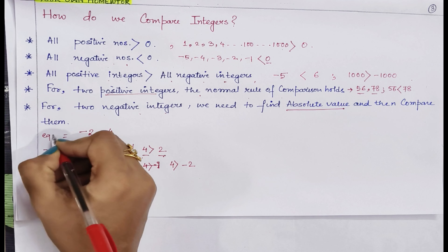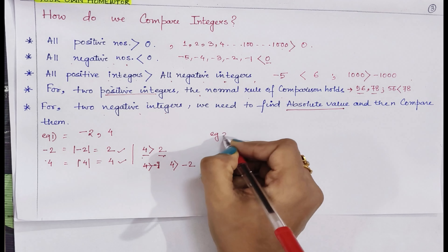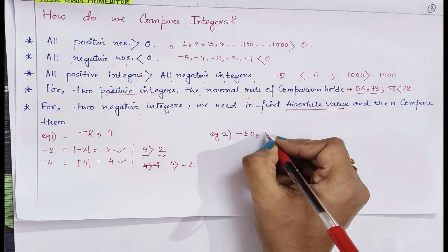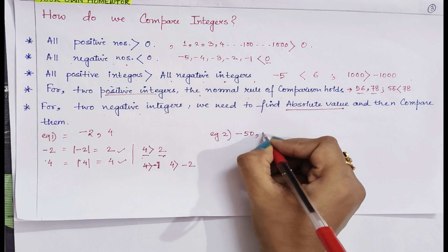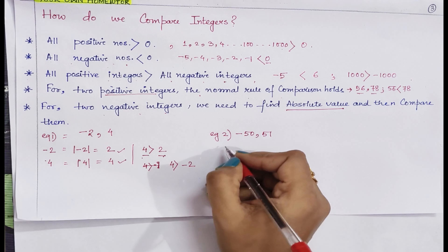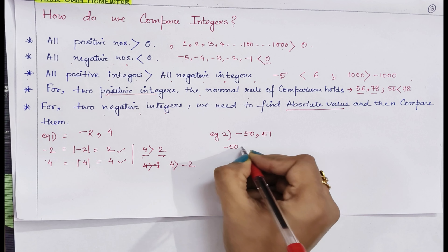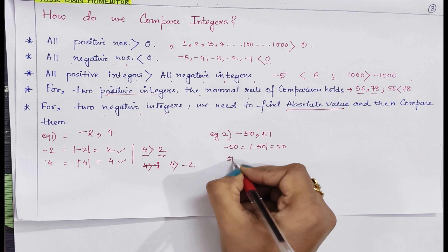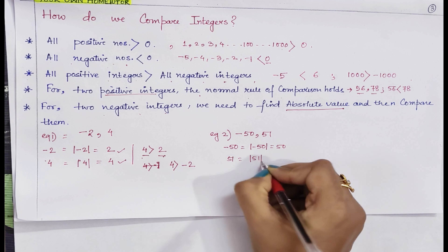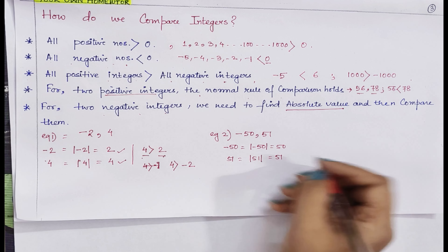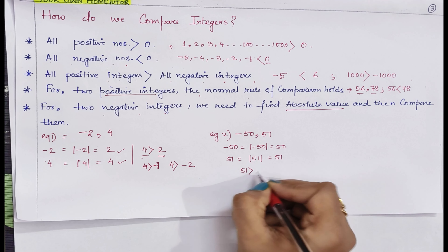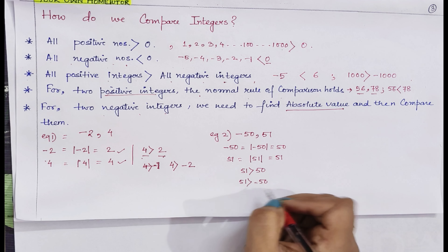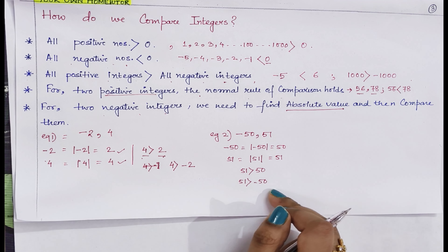Let's take example 2: between minus 50 and 51, which one is greater? The absolute value of minus 50 is 50, and the absolute value of 51 is 51. We know 51 is greater than 50. Therefore, 51 will always be greater than minus 50.